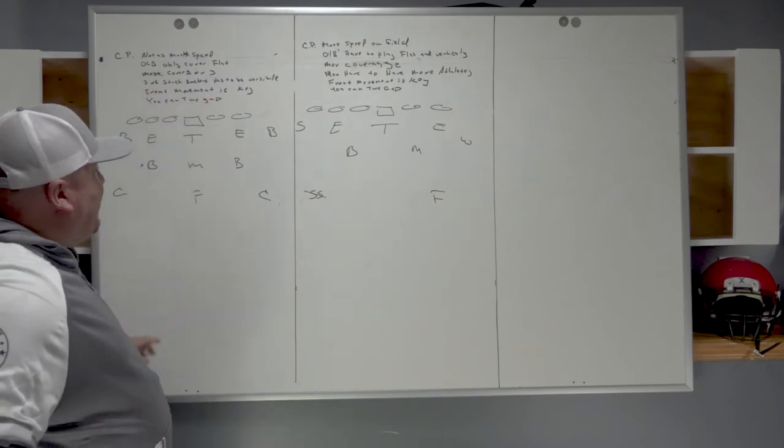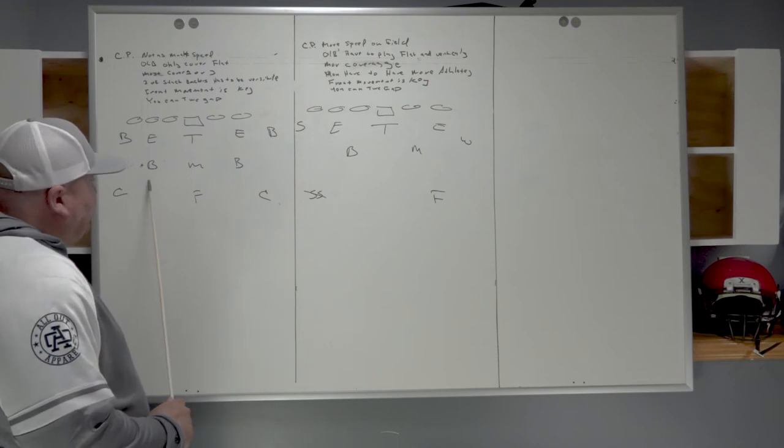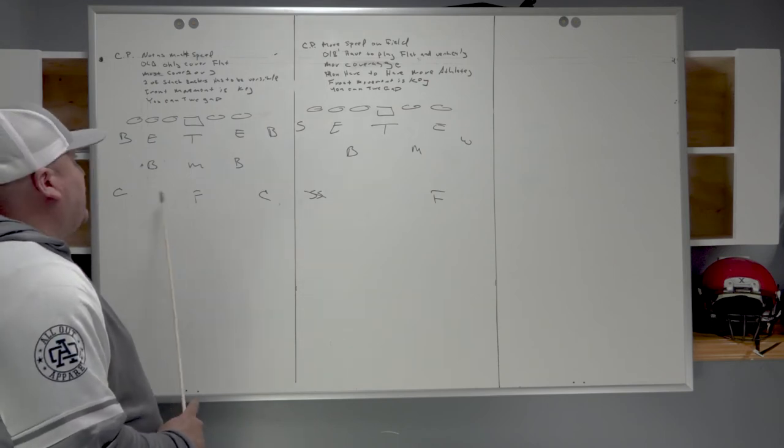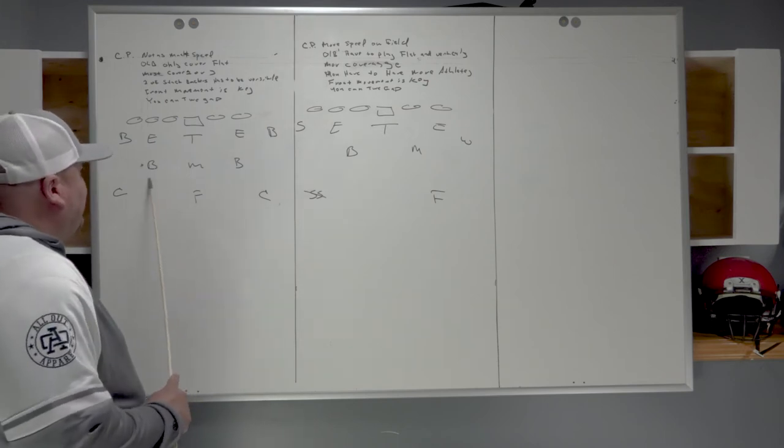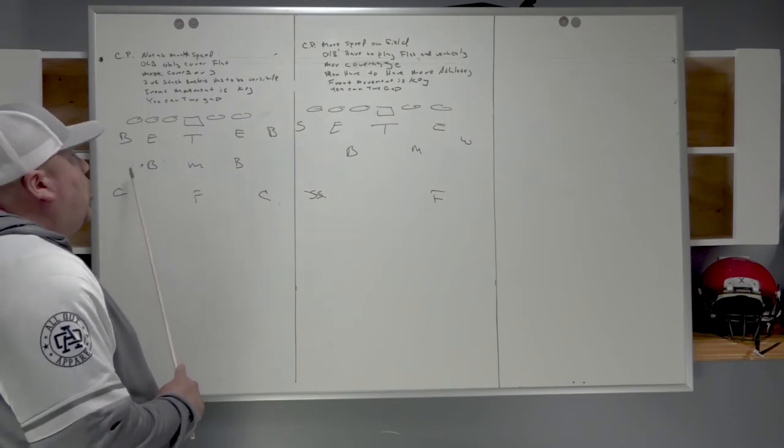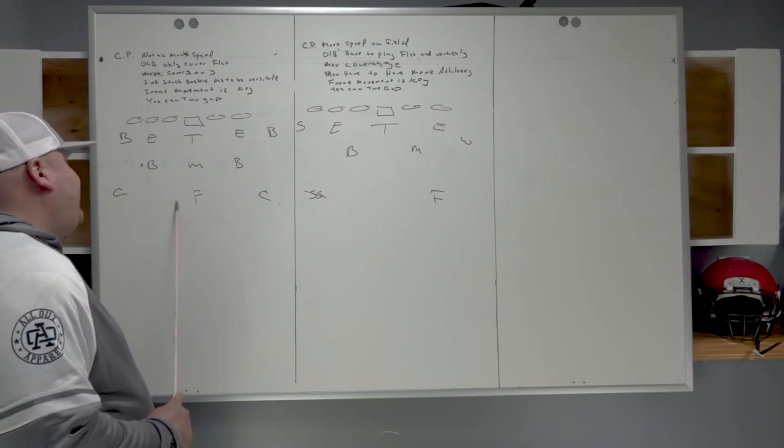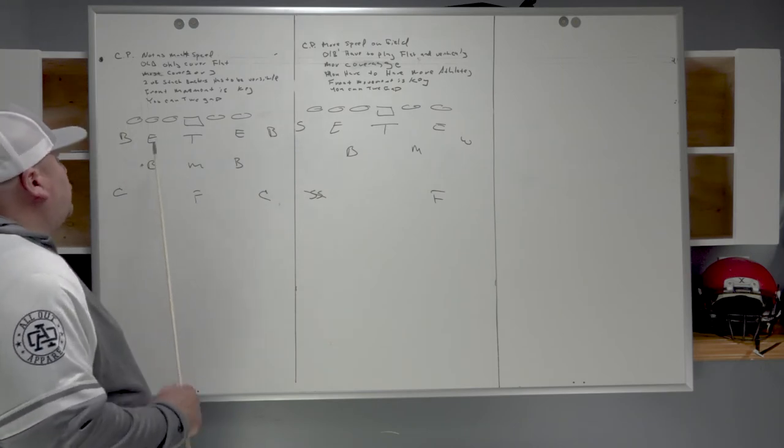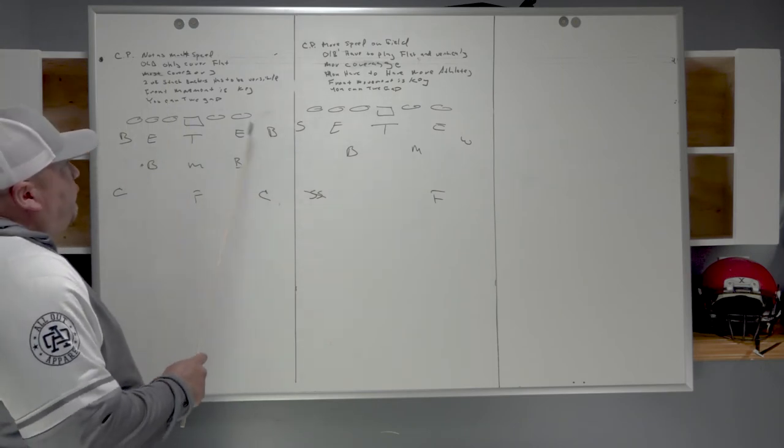One of the stacked backers in this situation needs to be versatile, a hybrid type player. Usually I would call this guy the Jack backer. He's the guy that would detach if necessary, or we drop him back to safety, or we'll have him cover number two in space.